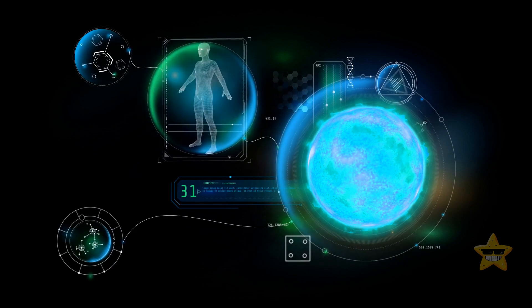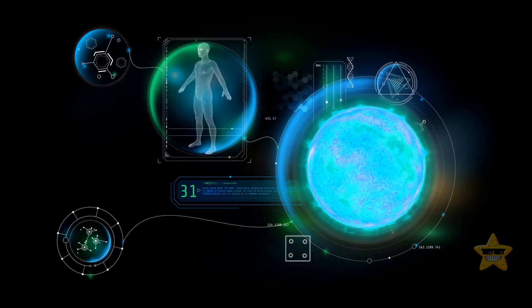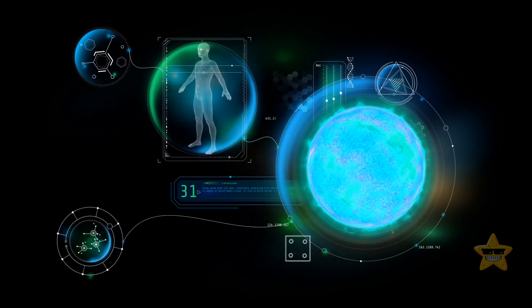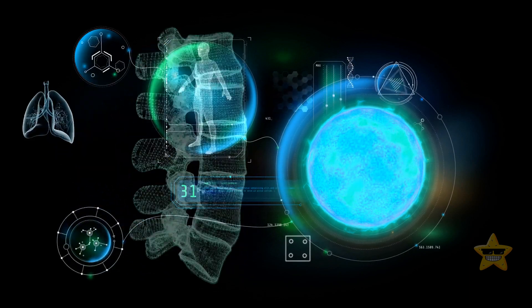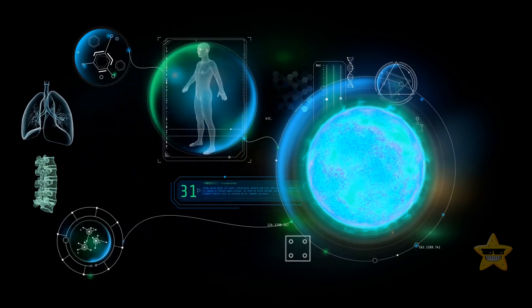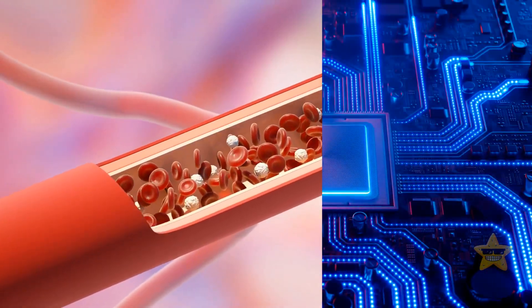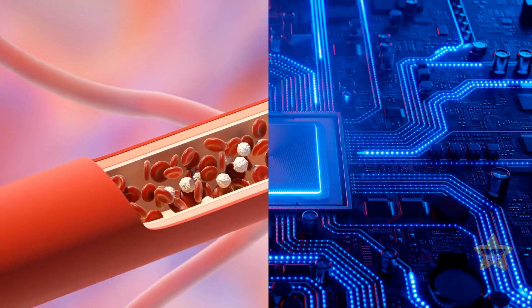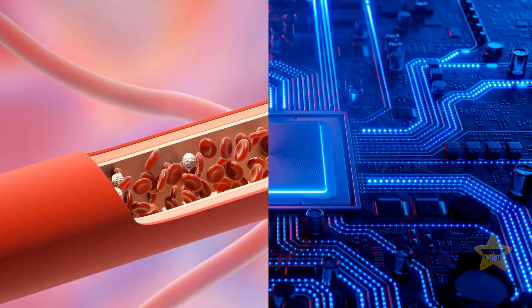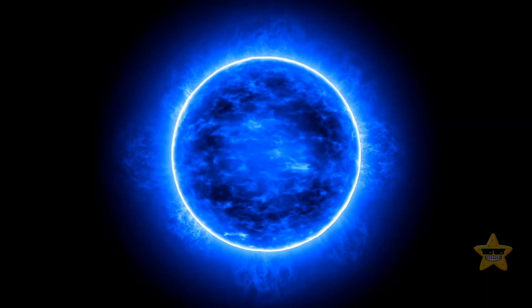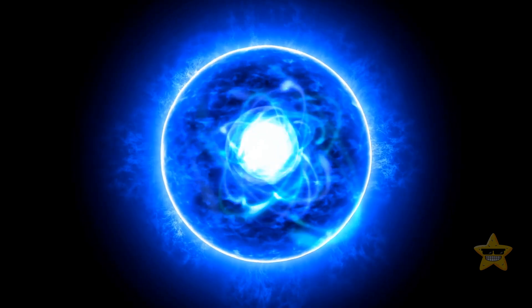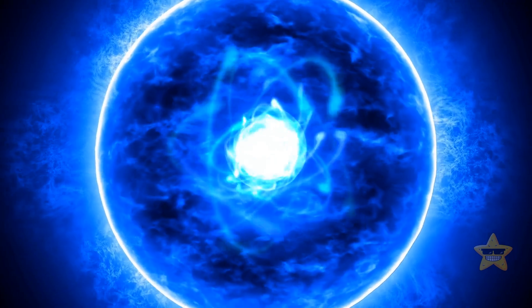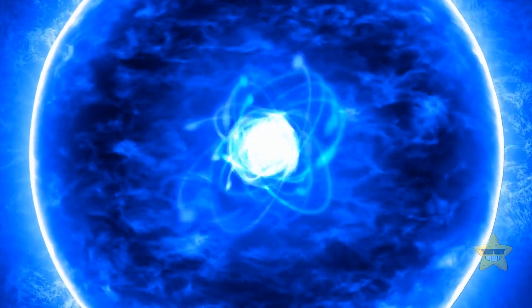It might come as a surprise, but many of the elements you're made of come from supernova. It can be anything from the oxygen you're breathing to the calcium your bones contain. The iron in your blood or the silicon in your computer could easily have been brewed in the heart of a star. And when a supernova explodes, it unleashes a storm of nuclear reactions, which in turn produces lots of building blocks making up the world around us.